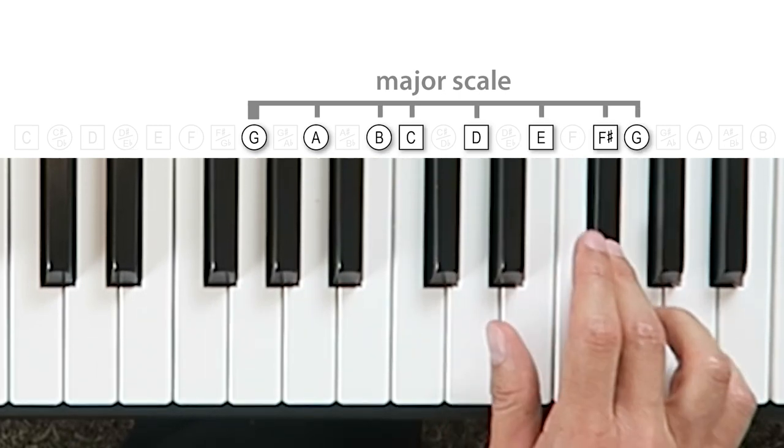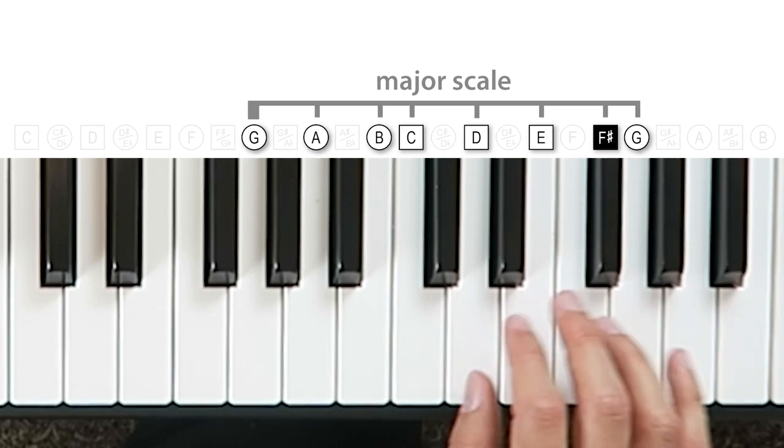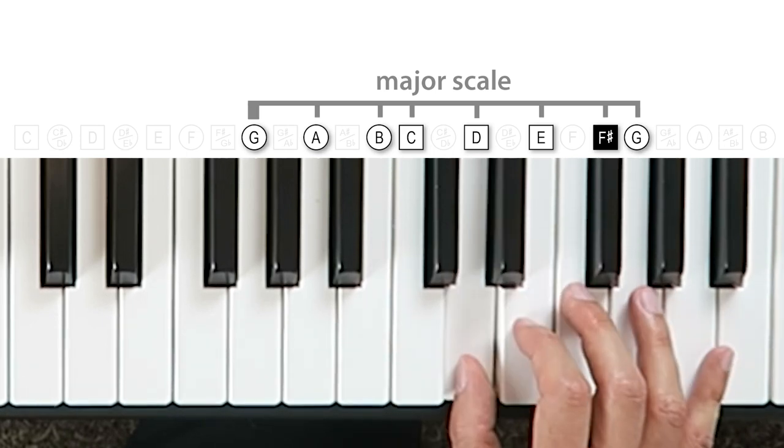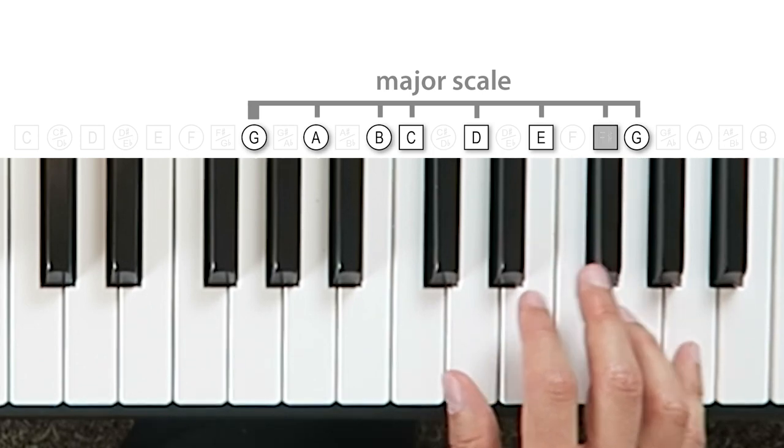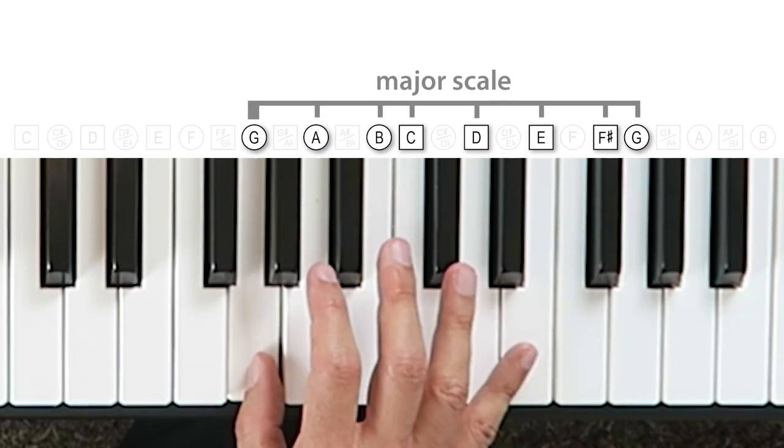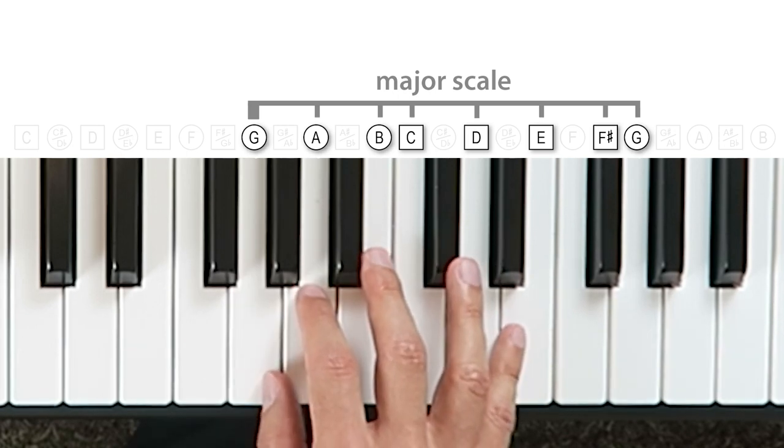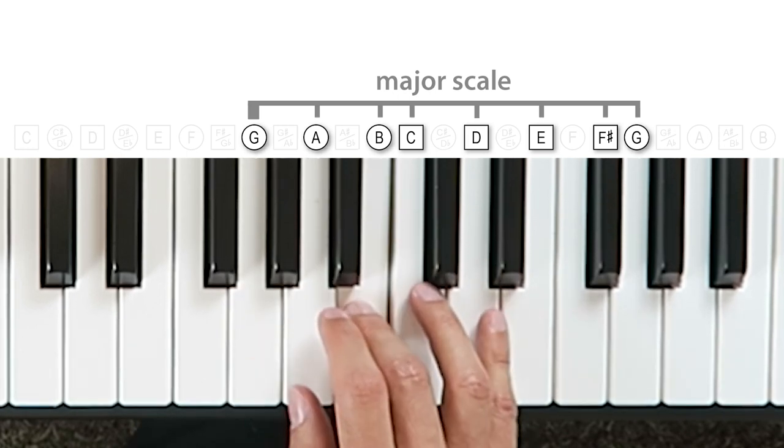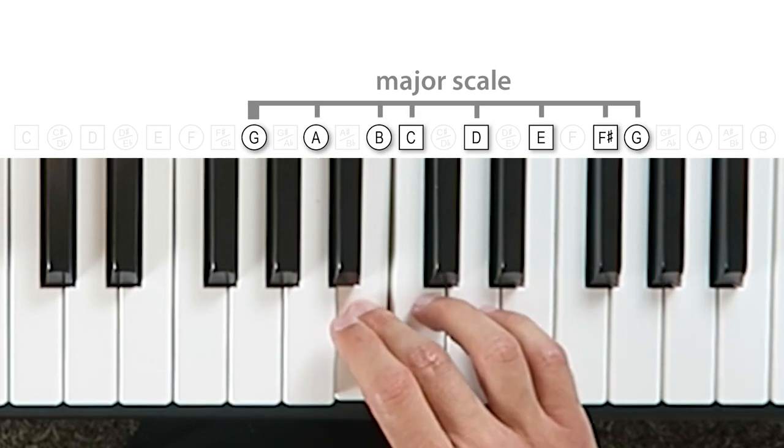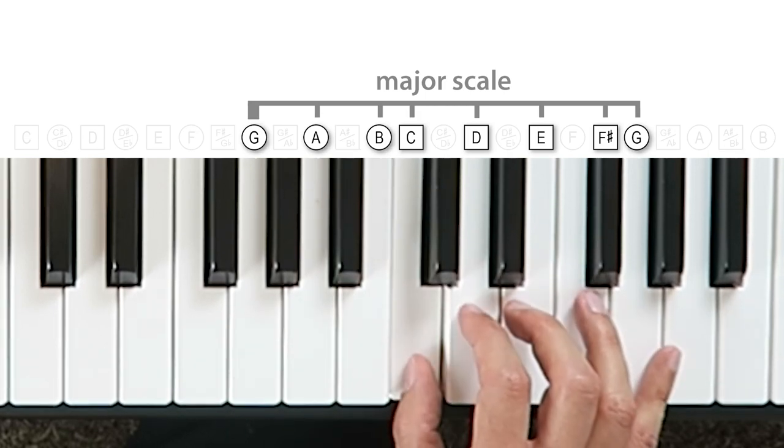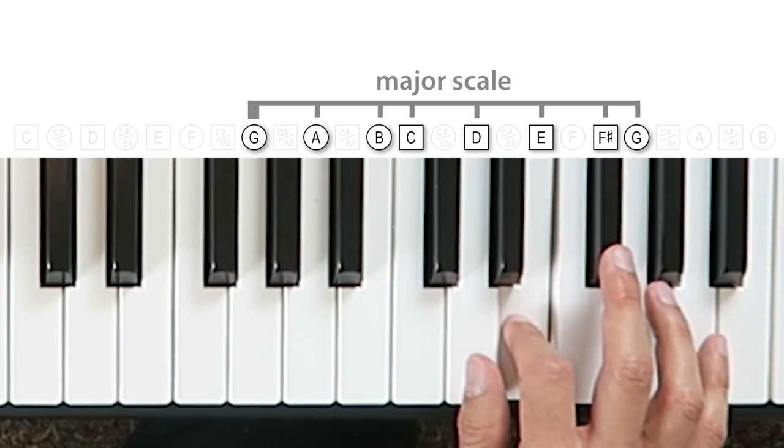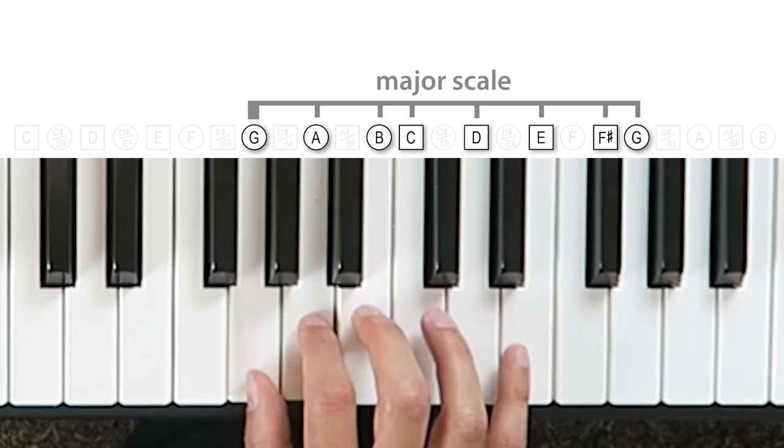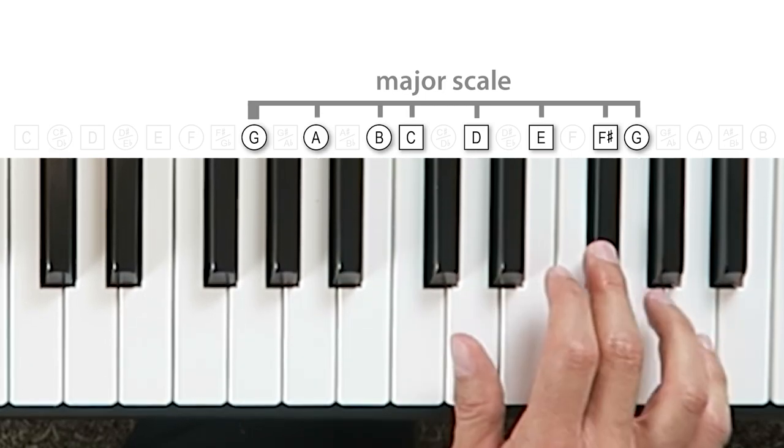But with the shapes to help picture these intervals, it's easy. This time we begin on G, a circle. So the major scale pattern is G, A, B, or circle, circle, circle, half step to a square C, and then D, E, F sharp, G, or square, square, square, circle. G, A, B, C, D, E, F sharp, G. One, two, three, four, five, six, seven, eight.